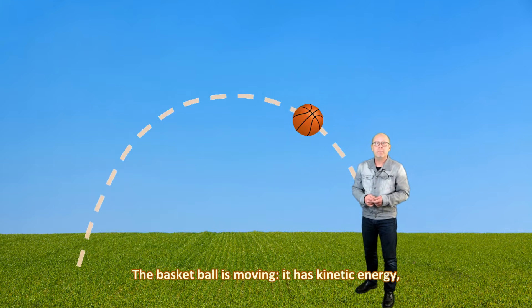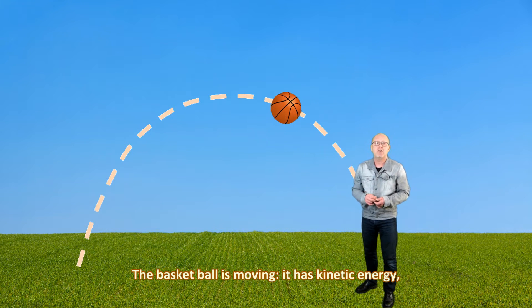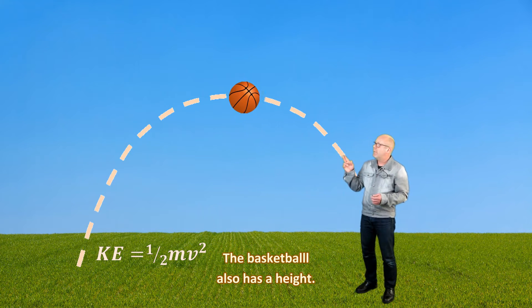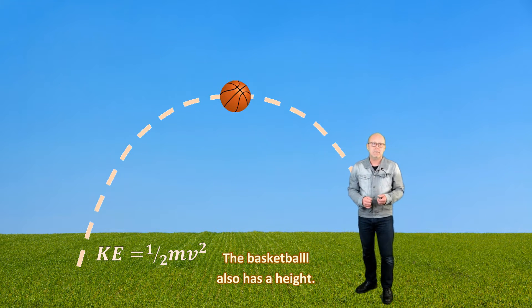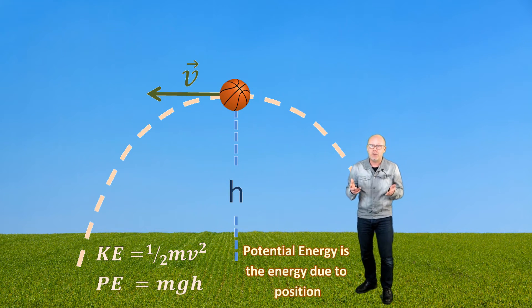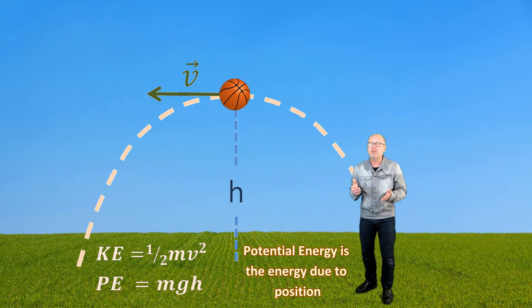The basketball is moving. It has kinetic energy, which is the energy of motion. The basketball also has a height. It has potential energy due to gravity. Potential energy is the energy due to position.